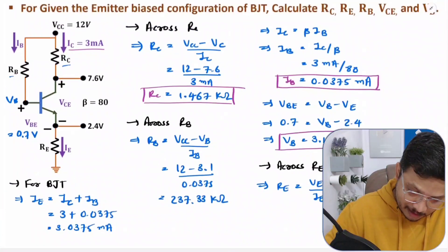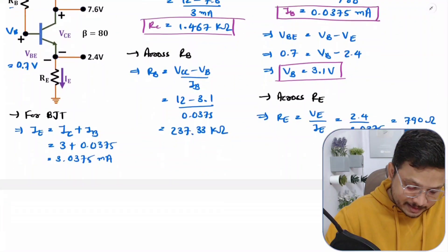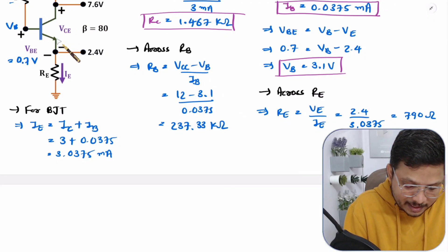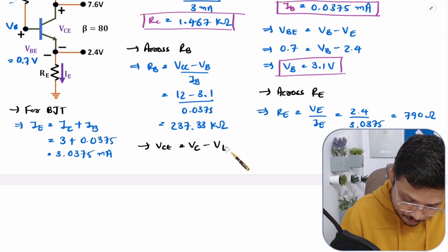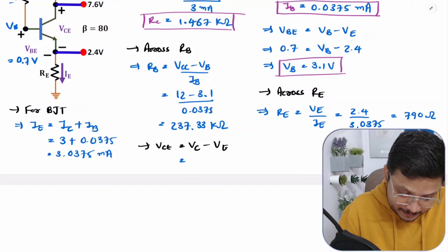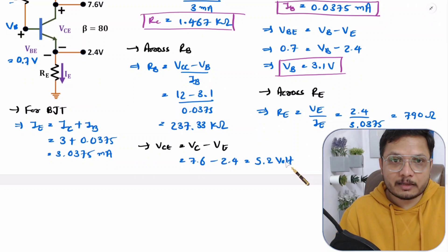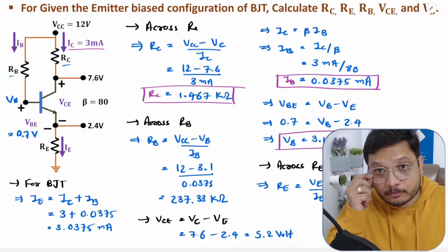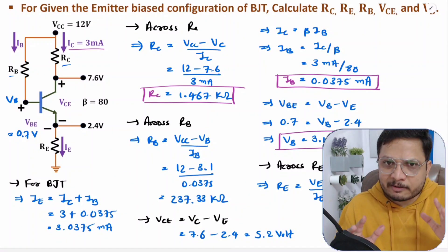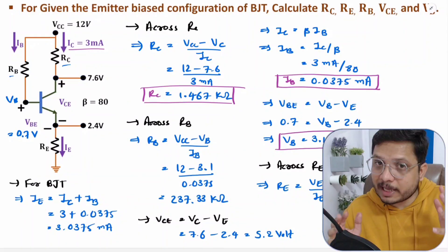Now we have RC, RE, RB, and VB. Only VCE remains. VCE is simply VC − VE = 7.6 − 2.4 = 5.2 volts. That is how we can find all the parameters. First, you need to do some practice by following videos in sequence — after that it will be easier to solve questions. I hope you have understood. If anything, please note it down in the comment section. Thank you so much for watching. Bye bye.